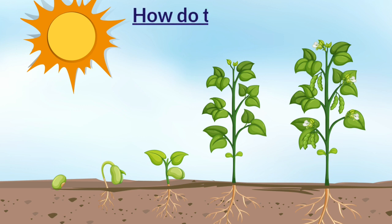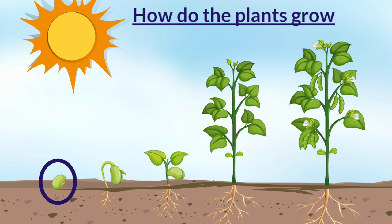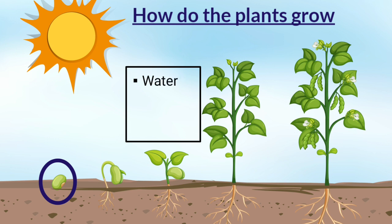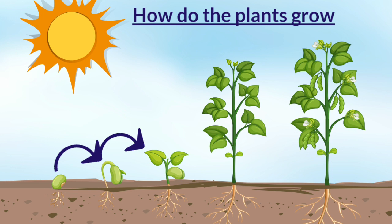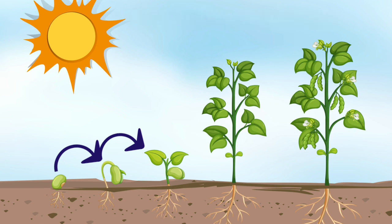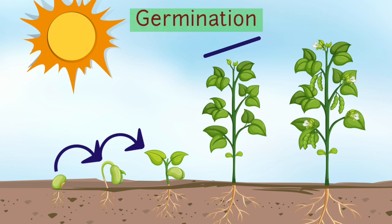Next, let us learn how do the plants grow. The plants grow from seeds. First of all, a seed gets planted in the soil. For the growth of the seed, it needs four main sources: water, air, sunlight and soil. Without these, the seeds cannot grow into a plant. Once these conditions are fulfilled, the seed begins to grow. The first sign of growth is a tiny root which comes out of the seed. Slowly, the shoot also starts growing upwards above the soil. Soon we see a baby plant grow with tiny leaves. This process of growth of the seed into a plant is called germination. That's how the plant grows.